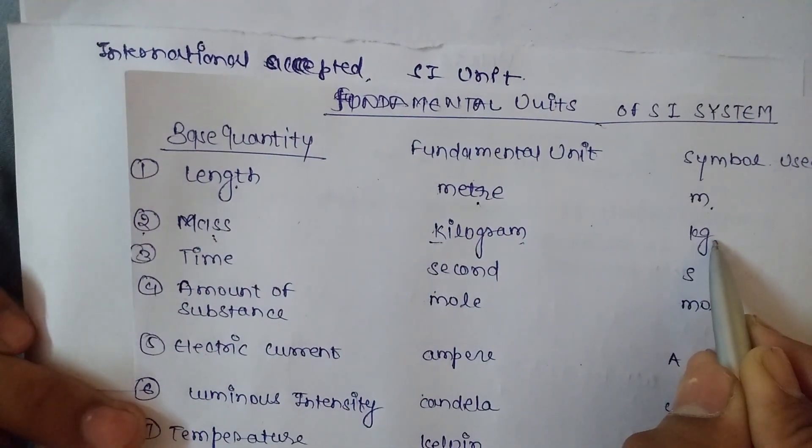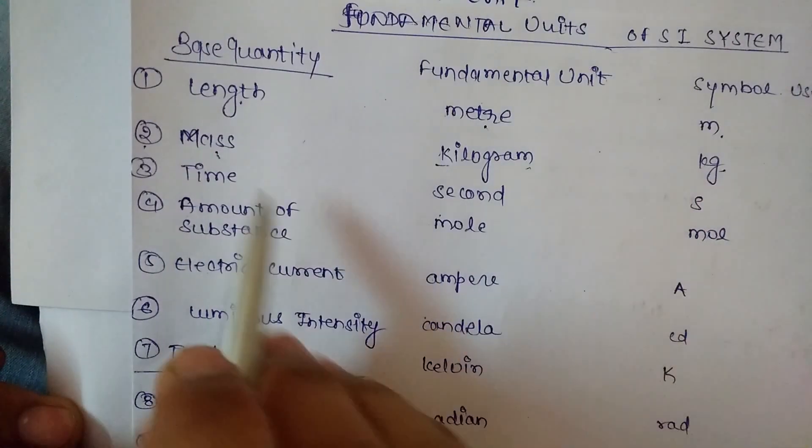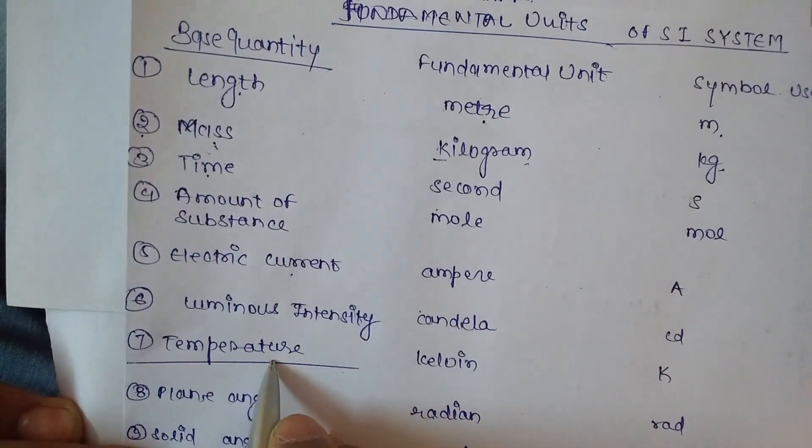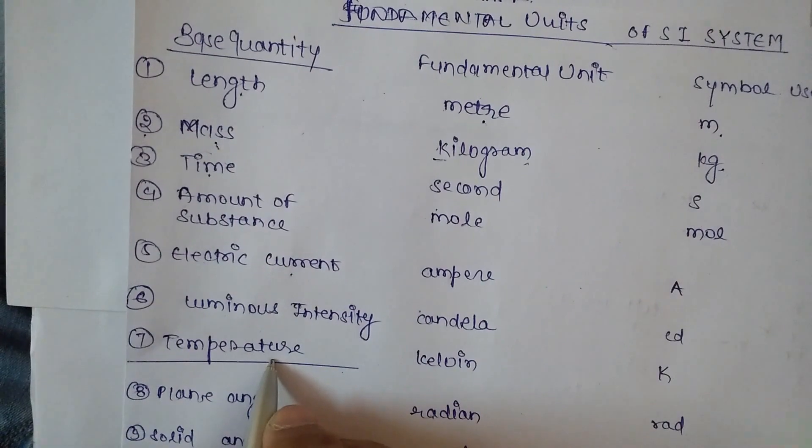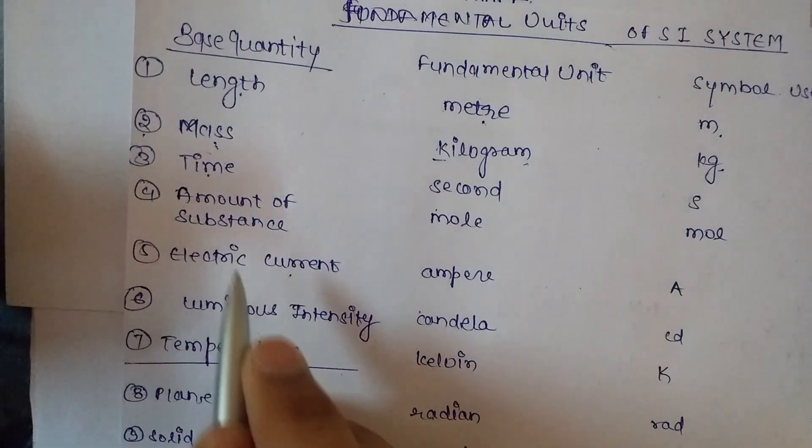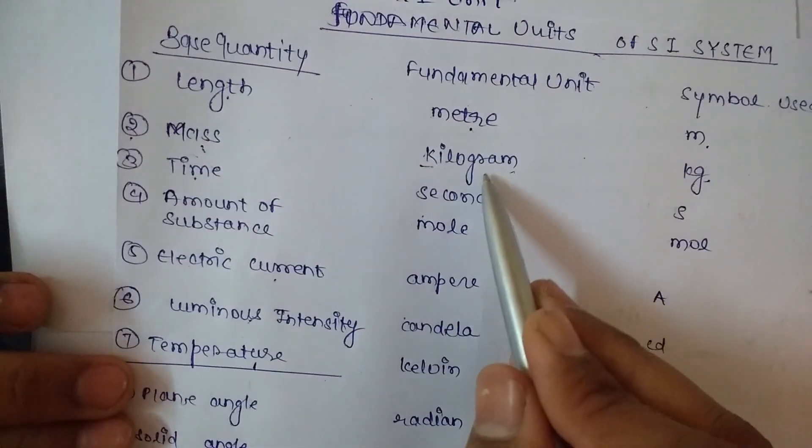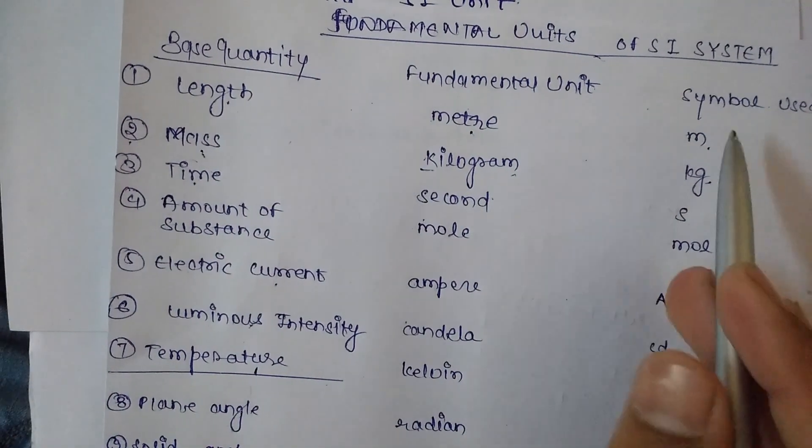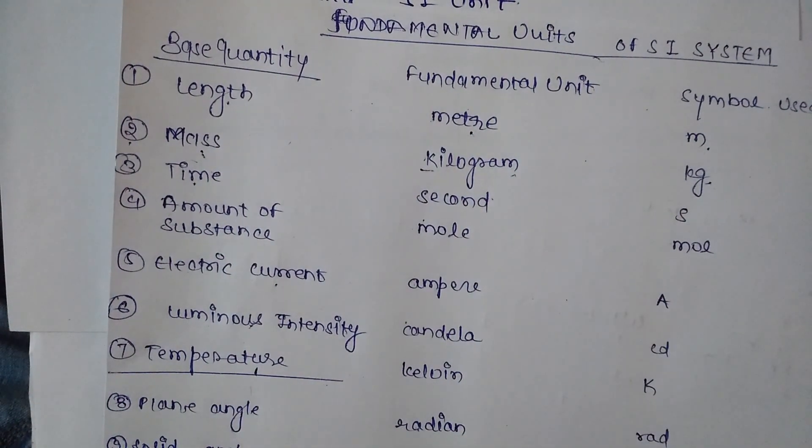Other base quantities include time, amount of substance, electric current, luminous intensity, and temperature. For these base quantities, fundamental units are second, mole, ampere, candela, and kelvin respectively, with their corresponding symbols.